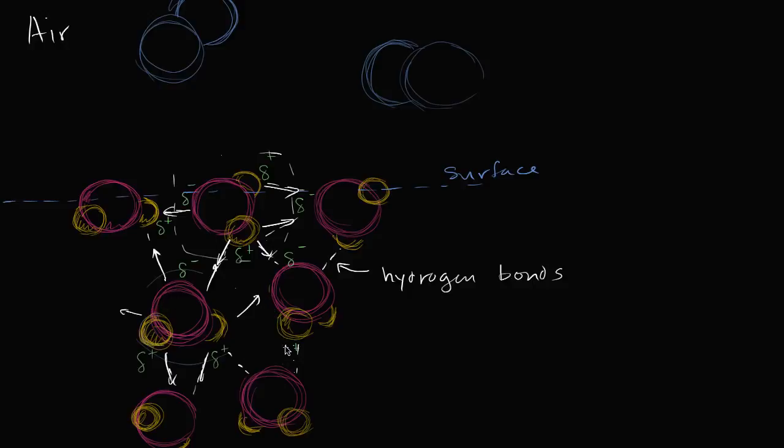And that causes a phenomenon known as surface tension. So you have stronger, you have kind of a deeper, and this is still just hydrogen bonds. But since they're not being pulled upwards by the air, they're able to get a little bit more closely packed and a little bit tighter. And this we refer to as surface tension.